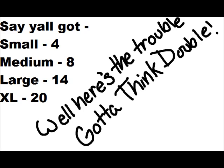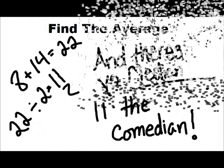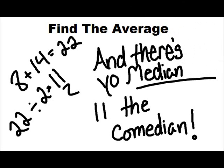But just wait till y'all get even. Say you've got small 4, medium 8, large 14, and extra 20. Well, here's the trouble — you've got to think double. Take the 2 in the middle, medium and large: 8 and 14. Find the average of 8 and 14: 22 divided by 2 equals 11. And there's your median 11.